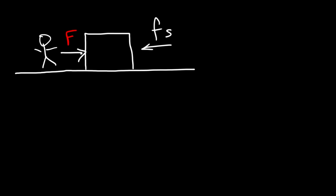The force that prevents the box from sliding in the first place is the static frictional force. Once it begins to slide, the force that impedes the motion is kinetic friction. Static means not moving. Kinetic has to deal with motion. So the frictional force that opposes motion when the object is sliding against the carpet is kinetic friction. The frictional force that prevents you from moving it when you first try to push it is static friction.